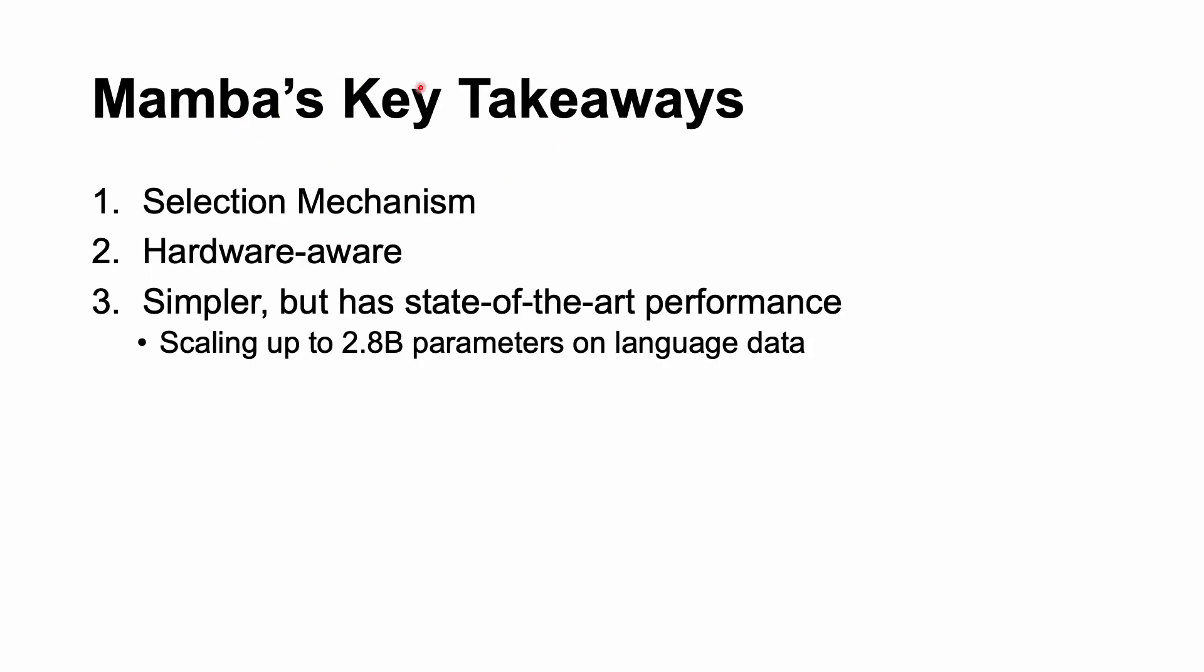So here are my key takeaways from that Mamba paper. Mamba improved S4 because of its selection mechanism, which allowed it to select relevant info in an input dependent manner by parameterizing the SSM's parameters based off of the input data. So it's the parameters A, B, C, D that I mentioned earlier. This is also a hardware-aware algorithm, because compared to transformers, which are quadratic in efficiency, Mamba scales linearly in sequence length because it computes recurrently with the scan. In addition, its simpler design demonstrates state-of-the-art performance compared to the other models, scaling up to 2.8 parameters on language data.